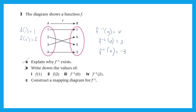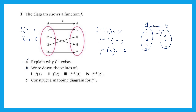For the mapping diagram, we will just copy the same thing, where this is set A and set B. We have 1, 2, 3, negative 3 on one side, and 1, 0, 5, 2 on the other side. So 1 maps out to 1, 0 maps to 3, 5 maps to 2. That's the inverse mapping.